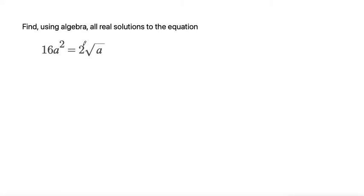To start this problem, I'll first isolate my square root. To isolate the square root, I'll divide both sides by 2. 16 divided by 2 is 8, so that makes 8a squared equals the square root of a.